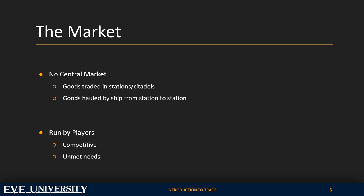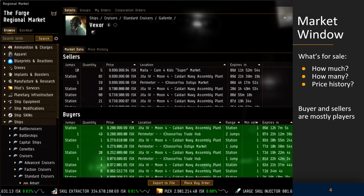In EVE there's not a central market. Goods are traded in stations and citadels and the goods are hauled by ship from station to station. Markets are run by players — in some markets there's fierce competition, in others needs go unmet.